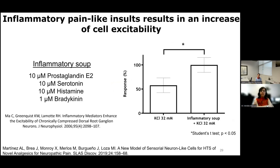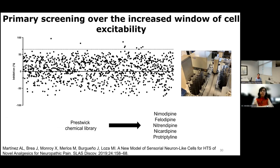It has been described that inflammatory mediators induce increases in the excitability of sensory neurons. To mimic this in our model, we exposed differentiated F11 cells to an inflammatory soup containing prostaglandin E2, serotonin, histamine, and bradykinin, inducing an increase in the response of F11 cells to potassium chloride. We performed a screening employing the Prestwick chemical library and identified five hits.